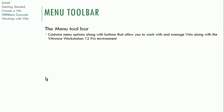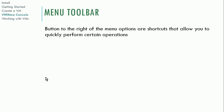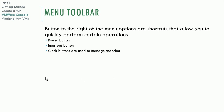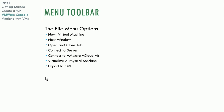The menu toolbar contains all menu options for VMware Workstation. Buttons to the right of the menu are shortcuts for common operations like the power button, interrupt button, clock buttons to manage snapshots, and the screen button for viewing the virtual desktop. Under the file menu, you can create new virtual machines, open new windows, open and close tabs, connect to a remote server, connect to VMware vCloud, and virtualize a physical machine — converting it to a VM.